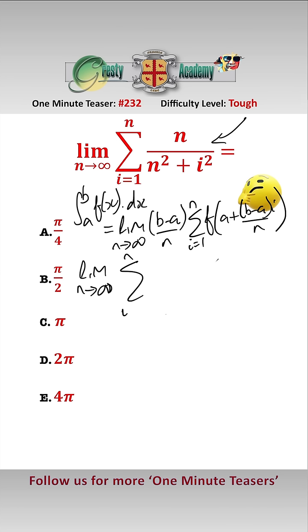That gives us the limit as n approaches infinity of the sum from i equals 1 to n of (1 over n) over (1 plus i over n squared). We can take the 1 over n out because n is a constant in the summation. Therefore we have the limit as n approaches infinity of 1 over n times the sum from i equals 1 to n of 1 over (1 plus i over n squared).